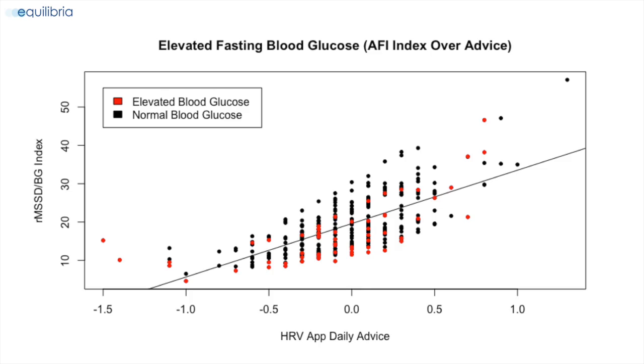As you can see, even when the HRV app daily advice was actually positive — meaning theoretically we should have a lesser inflammatory response and sympathetic activation — the persons here had an elevated blood glucose. So I then carried on in my research project, looking at the HRV plots of six different groups.